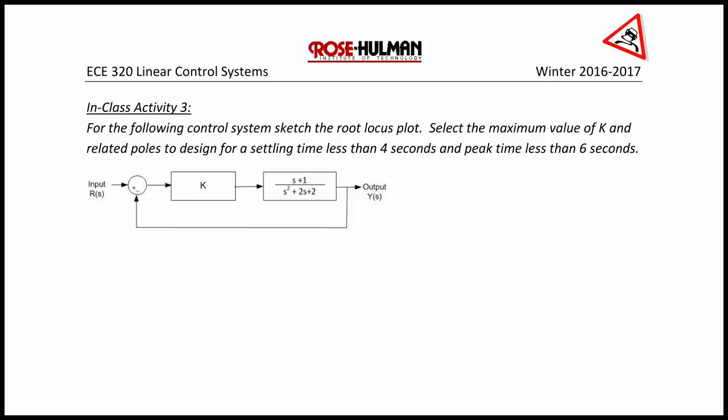In Class Activity 3, for the following control system, sketch the root locus plot, select the maximum value of k and related poles to design for a settling time less than 4 seconds and a peak time less than 6 seconds.